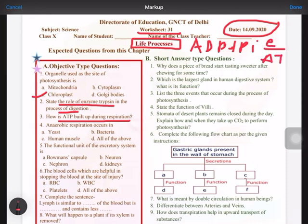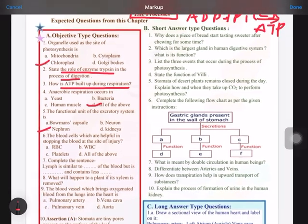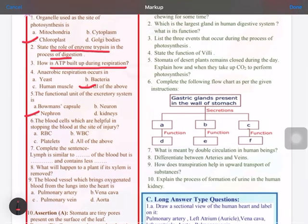Fourth is anaerobic respiration occurs in yeast, bacteria, human muscles. The answer is all of the above. The functional unit of excretory system is nephron. The blood cells which are helpful in stopping the blood at the site of injury is platelets.